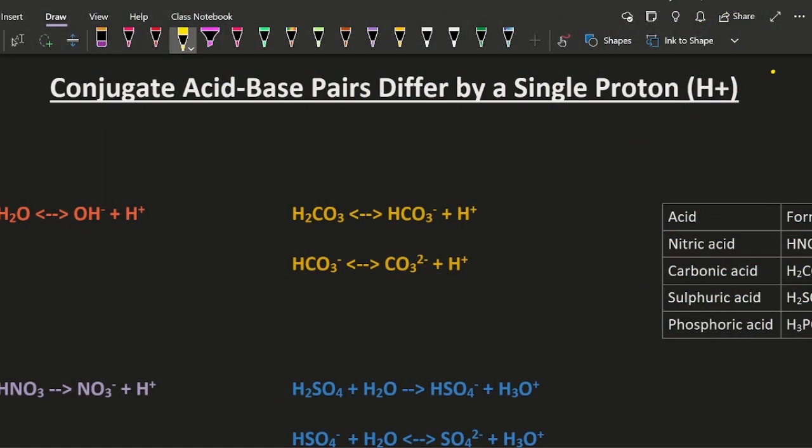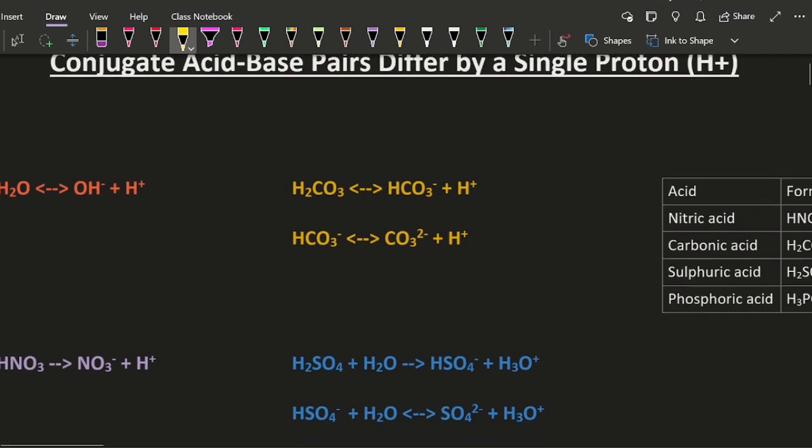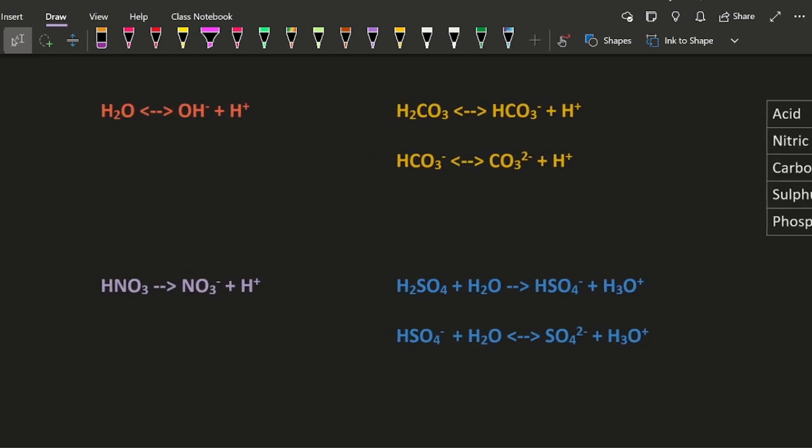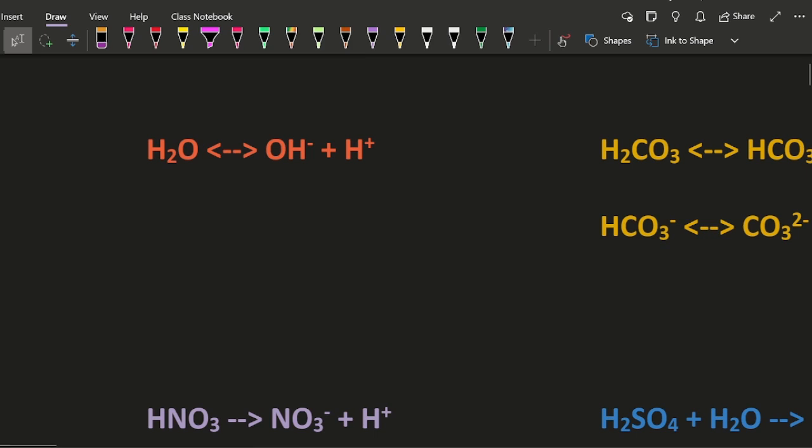Conjugate acid-base pairs differ by a single proton, just an H+. The IB wants you to learn this in the context of polyatomics like ammonium and carbonate, phosphate, sulfate, etc. Let's look at a simple one. What is the conjugate acid-base pair here? Well, it's got to be that and that. Those are different by H+.